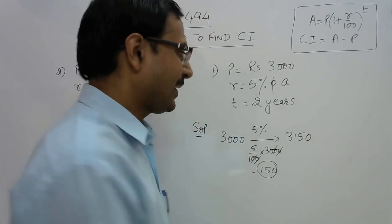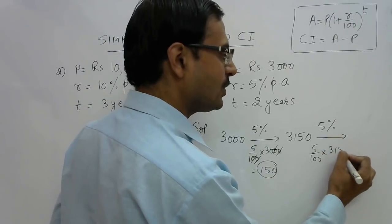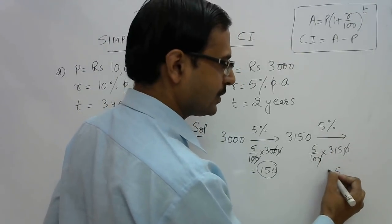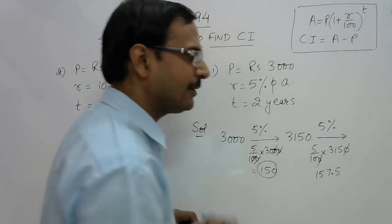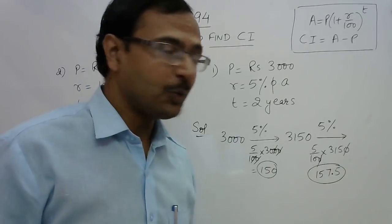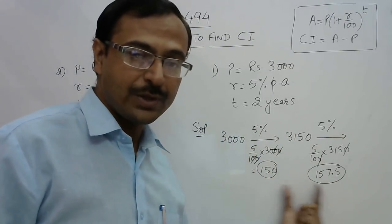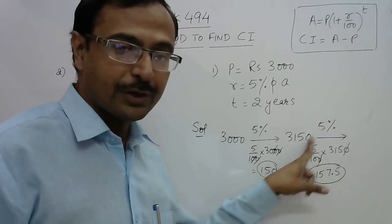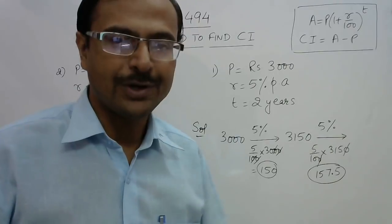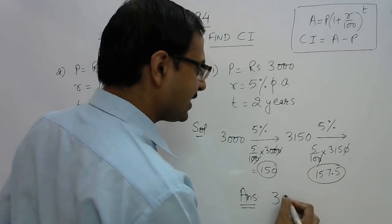For year two, take another 5%: 5/100 × 3150 = 157.5 rupees interest. Notice that the principal amount has changed for the second year, and the interest for the second year is greater than the first year — that is why this is called compound interest. Adding both interests: 150 + 157.5 = 307.5 rupees is the answer.